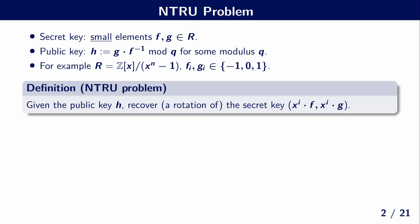What is exactly the NTRU problem? First, we have a secret key that consists of small elements F and G in some ring R. Then we have a public key H, given by G times F inverse, modulo Q, for the modulus Q, assuming that F is invertible. Throughout this presentation, you can assume that R is equal to Z[X] quotient by X^N minus 1, and that F and G are polynomials with coefficients in {-1, 0, 1}.